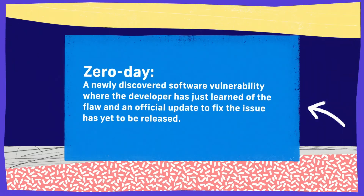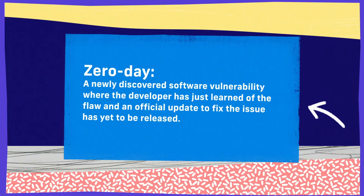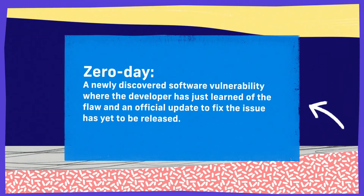If a zero day is discovered by a malicious actor, that can be used against you or other people, and you would have no way to defend against that vulnerability — because it would be a vulnerability in, say, your web browser, that not even Google or Microsoft or Firefox know about, and they haven't patched it yet.